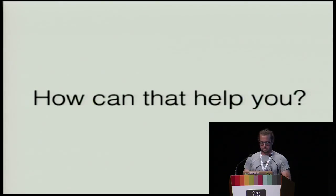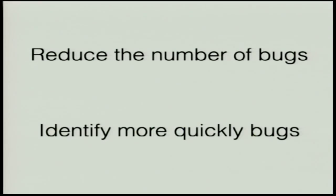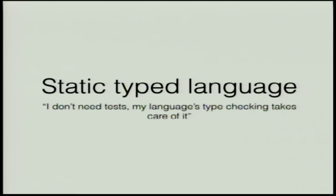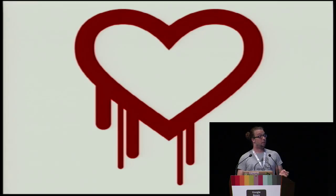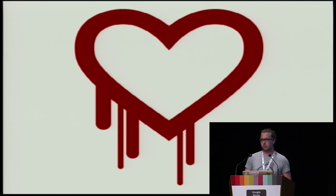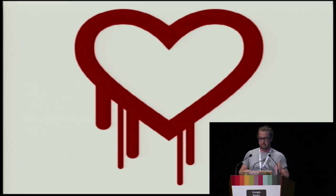Since Python is a dynamically typed language, what can static type checking help us with? It does help us reduce the number of bugs and identify them more quickly during development. With statically typed languages, people often say they don't need tests because their type system handles that — though I don't think that's entirely true. People also say a bug is merely a poorly typed or poorly checked type. This brings up Heartbleed — people complained that if OpenSSL had been written in a language with a better type system, the Heartbleed bug would never have happened. That's up for discussion.